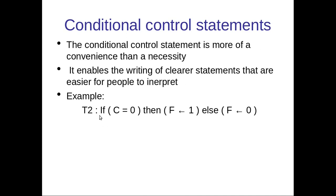Example: T2: If(C = 0) then (F ← 1) else (F ← 0). So when the timing variable T2 occurs and C is equal to 0, then this microoperation will be executed.